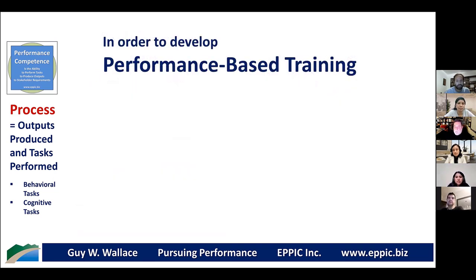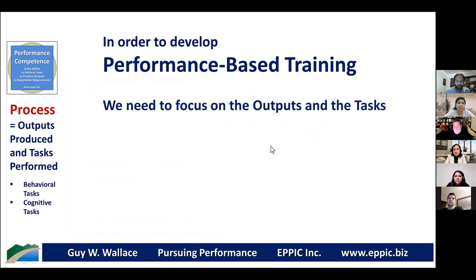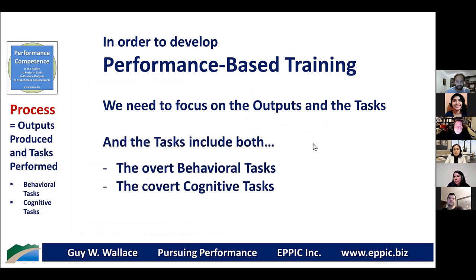When we develop performance-based training or instruction that helps people perform, we need to understand what the outputs and tasks are. First, focus on what outputs people are supposed to produce, and then what tasks they must perform to produce those outputs. We must be careful because there are two types of tasks: overt behavioral tasks — things people do that we can observe, count, and measure — and cognitive tasks, which are covert thinking tasks. If we don't teach learners how to think about their performance, our instruction will be incomplete.